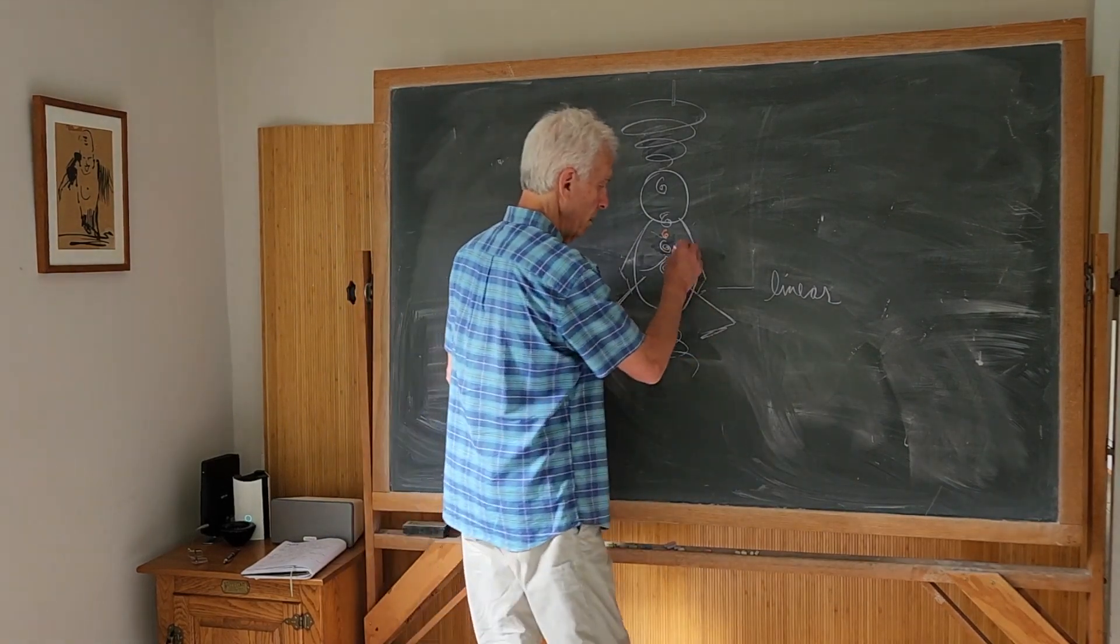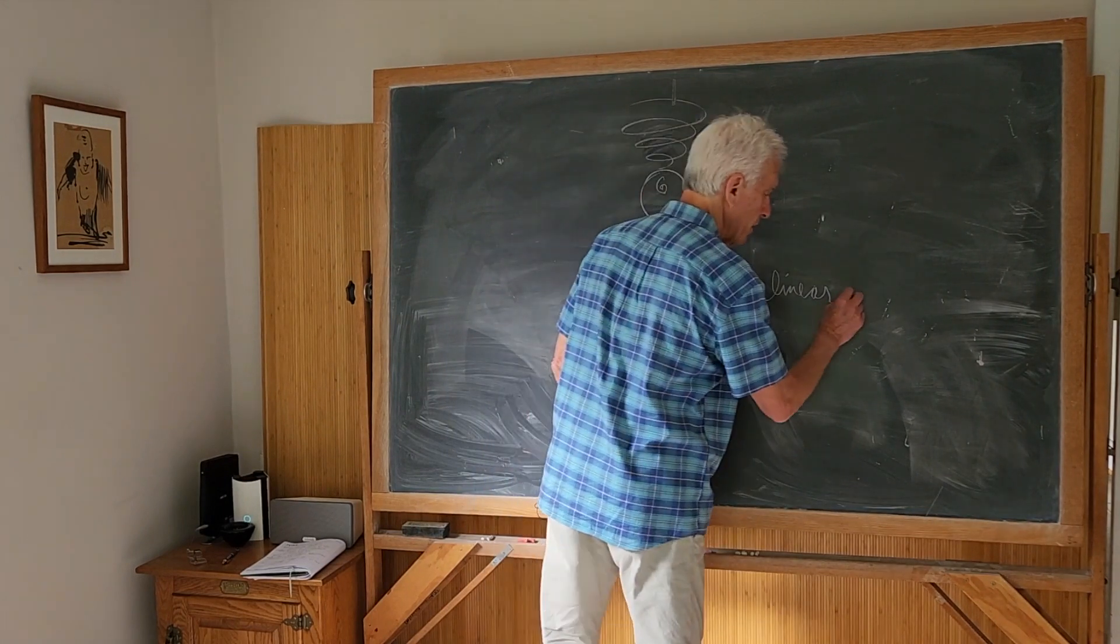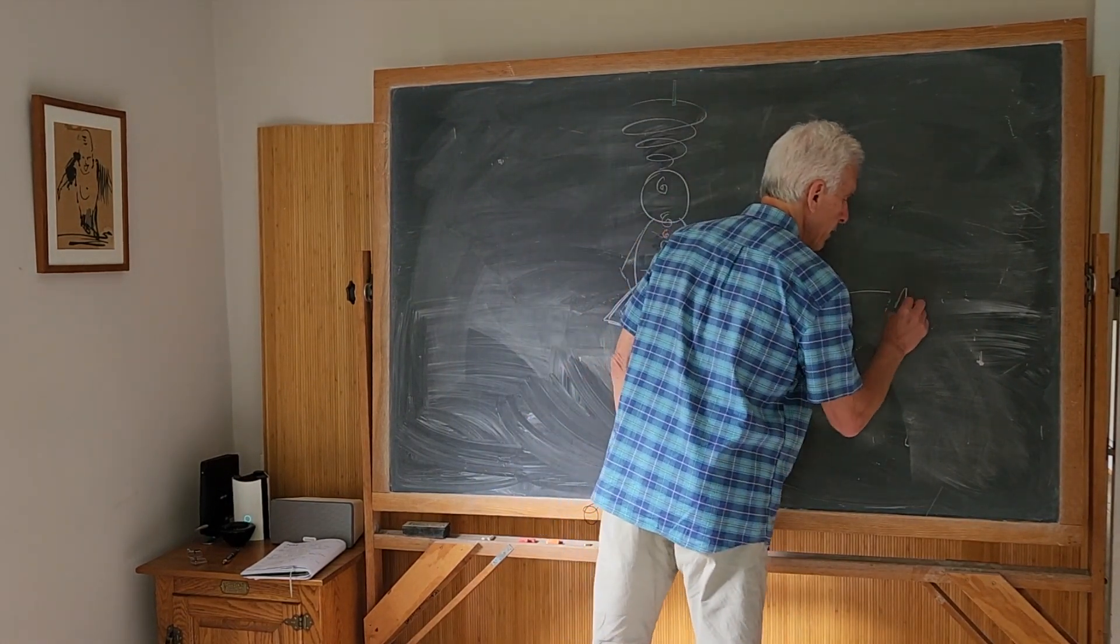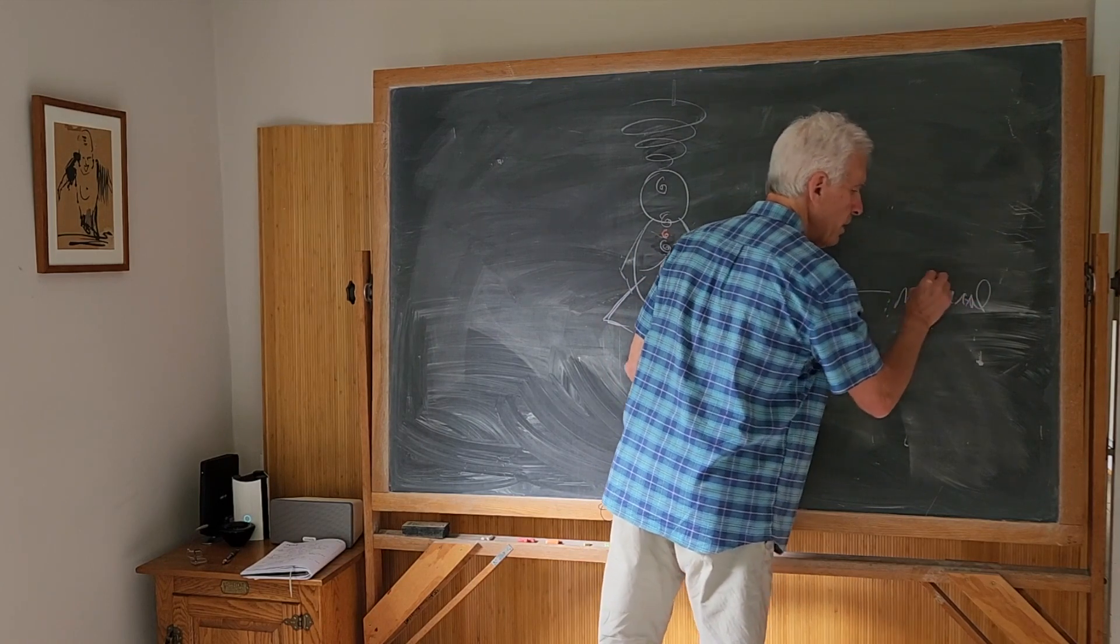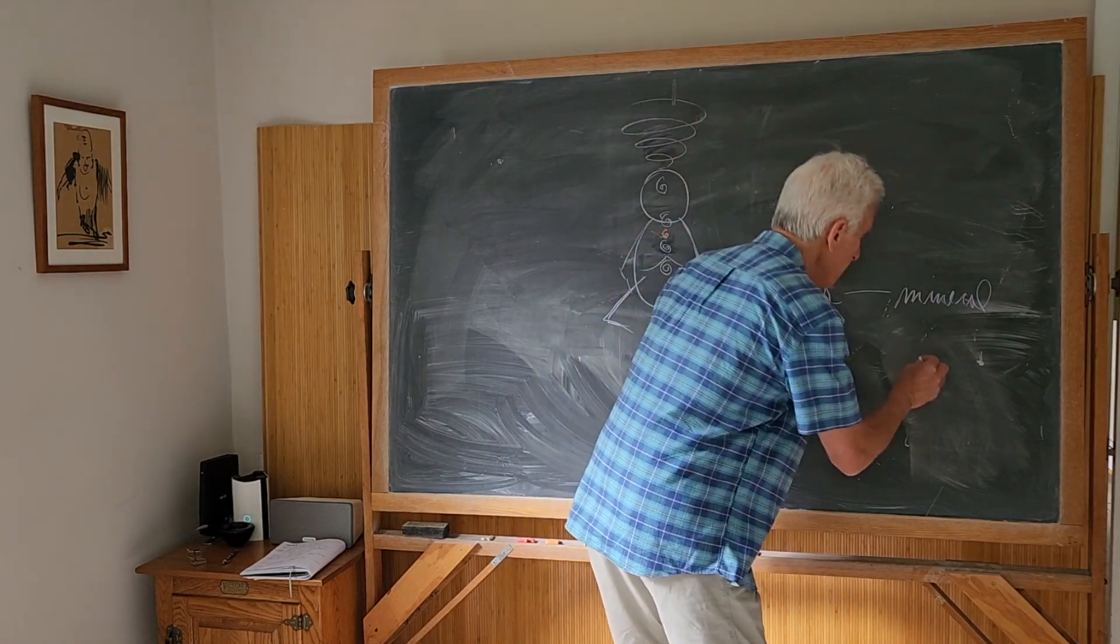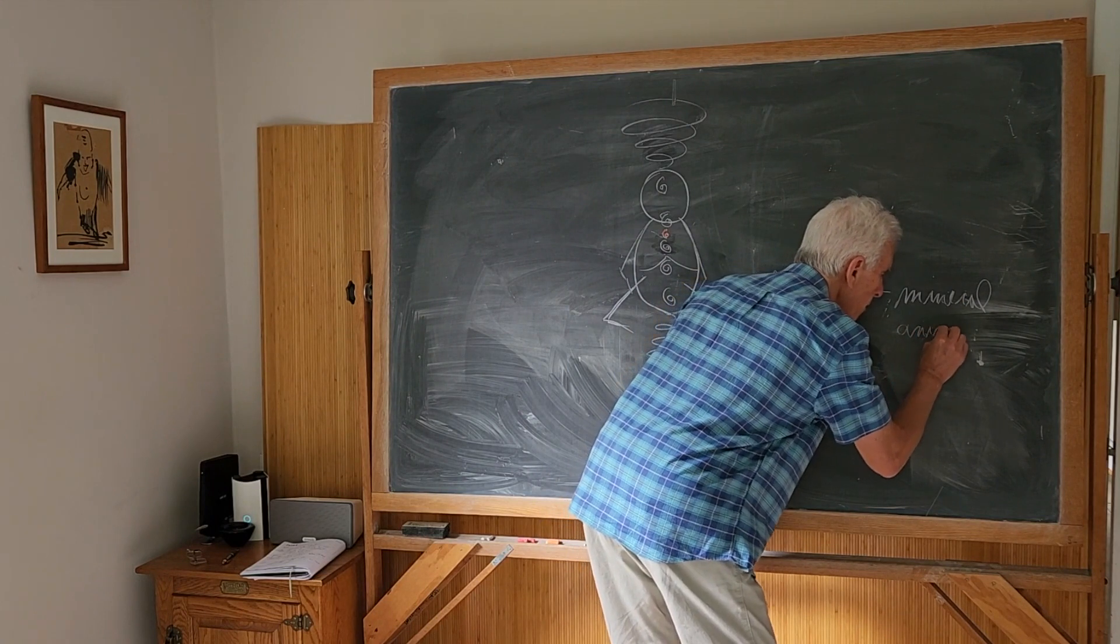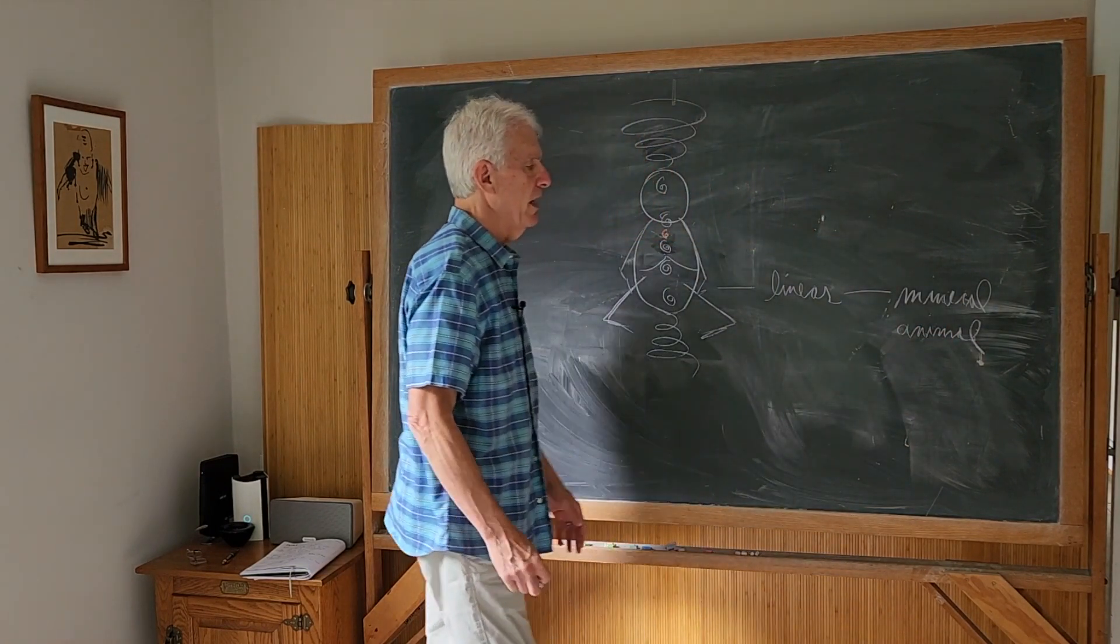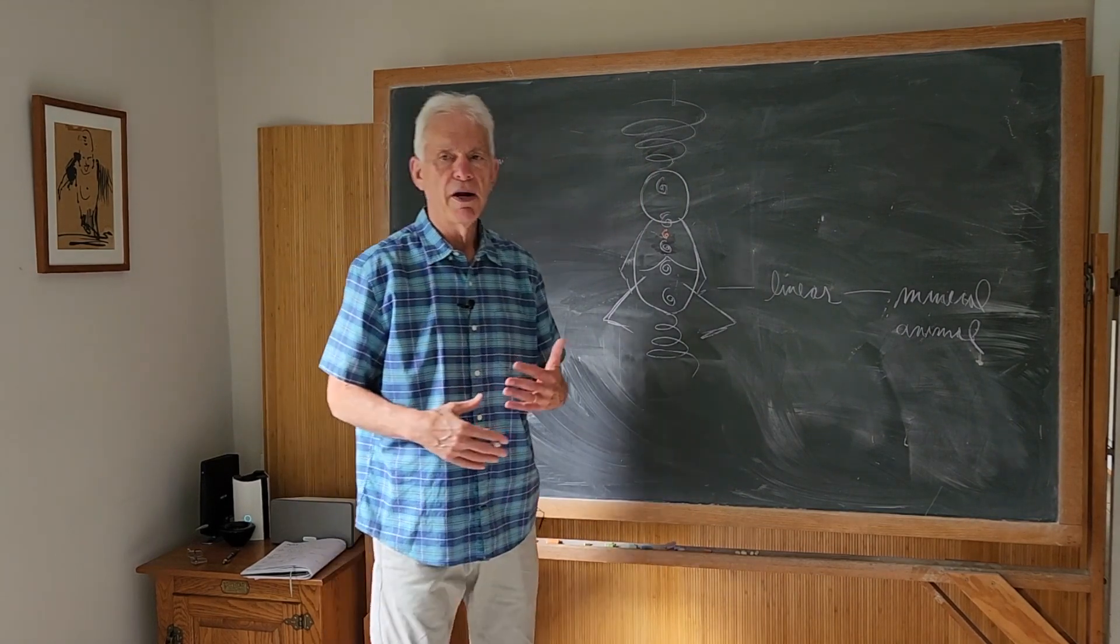This lower configuration of chakras or centers is more related to the mineral kingdom. And that's a whole spectrum of information to the animal kingdom. And in the animal kingdom, you have various species.